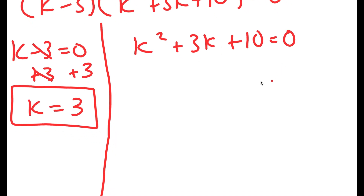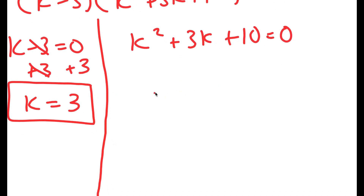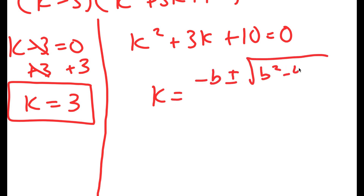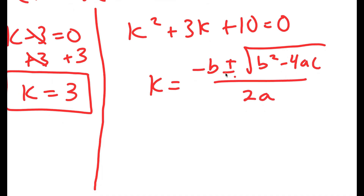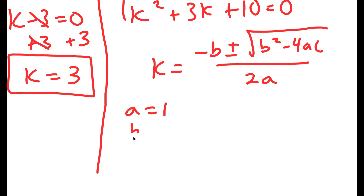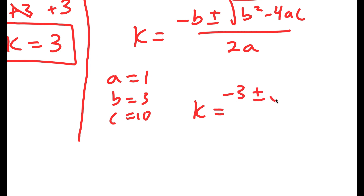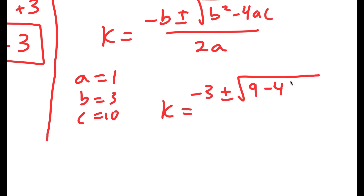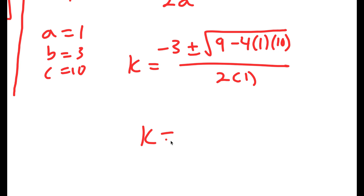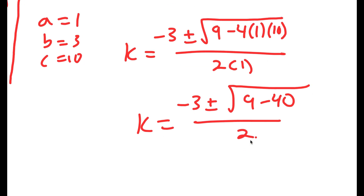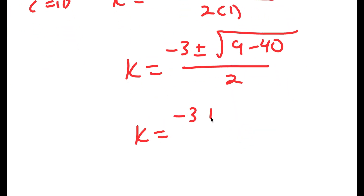For k squared plus 3k plus 10 equals 0, because this is a quadratic equation, I can use the quadratic formula: negative b plus or minus the square root of b squared minus 4ac all over 2a. In this case, a is 1, b is 3, and c is 10. So I get k equals negative 3 plus or minus the square root of 9 minus 4 times 1 times 10, all over 2 times 1. This equals negative 3 plus or minus the square root of 9 minus 40 over 2, which is negative 3 plus or minus the square root of negative 31 over 2.